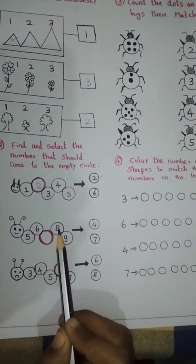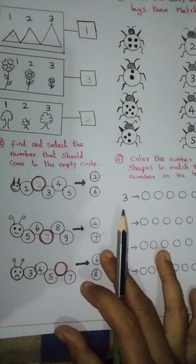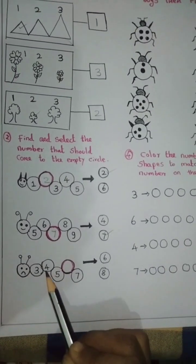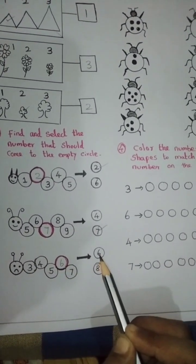Next, 5, 6, 7, 8, 9. 6 after comes 7. Tick 7. Next sequence: 3, 4, 5, 6, 7. Tick 6.